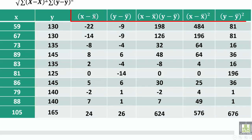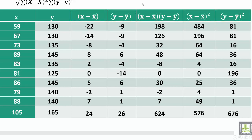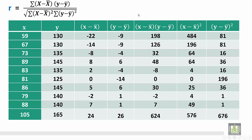We first calculate the mean of x, then subtract x-bar from each x value. We do the same with y — we calculate y-bar, the mean for the blood pressure, and subtract each y value from y-bar. The x-bar equals 81 kilograms, and y-bar equals 139 mmHg.